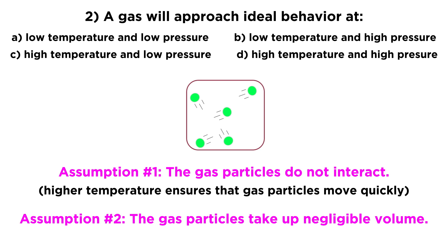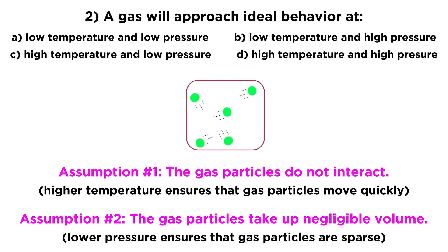Assumption number two is that the gas particles take up negligible volume — we ignore the volume of the gas particles themselves for an ideal gas. This requires lower pressures, because the gas particles must be very sparse with a lot of empty space. At very high pressure the gas is compressed, particles are close together, and the volume of the particles becomes a significant fraction of total volume. So we need high temperatures and low pressures to assume ideal gas behavior — that's option C.